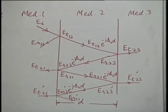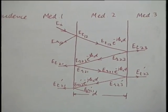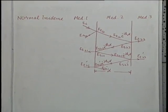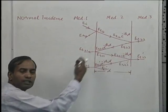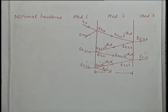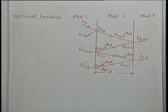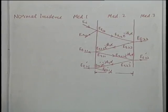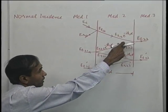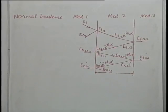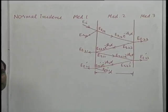A student asks: when E_r2,3 reaches the interface between media 1 and 2, does it become E_r2,3 · e^(−jk₂d) or with a plus sign? The instructor clarifies: the convention followed is that in the direction of travel, the phase is going to decrease, so we are being consistent in following that convention. Although the direction of propagation of this wave is opposite to the other wave, the way we put down the phase shift is correct.